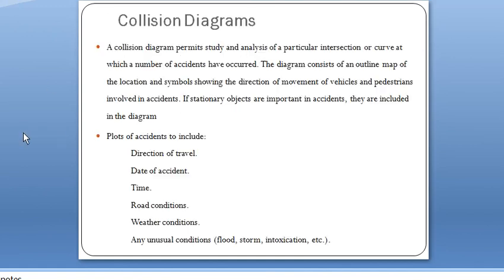The last type is the collision diagram. This diagram permits study and analysis of a particular intersection or curve at which a number of accidents have occurred. It consists of an outline map of the location and symbols showing the direction of movement of vehicles and pedestrians involved in the accidents. If stationary objects like trees are important in an accident, they are also included in the diagram.